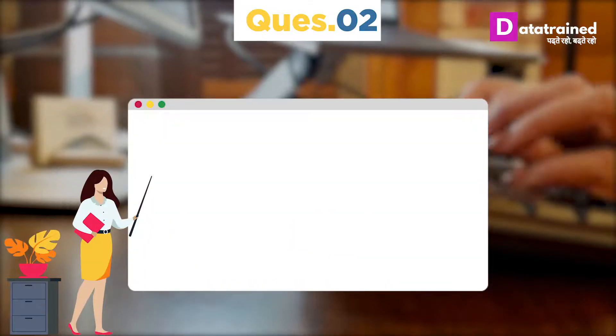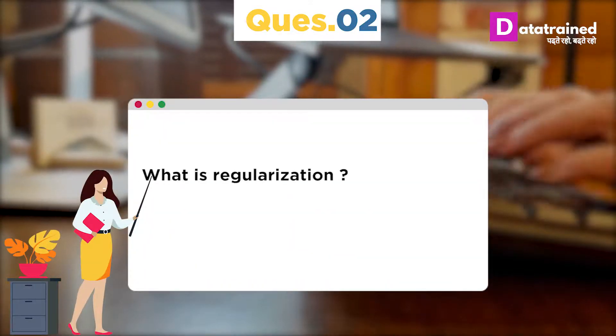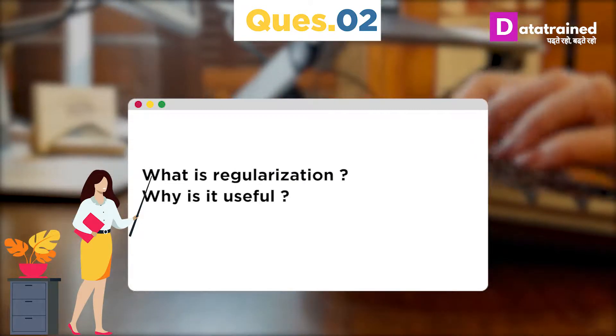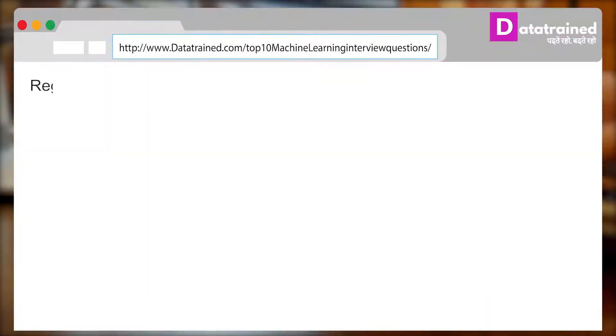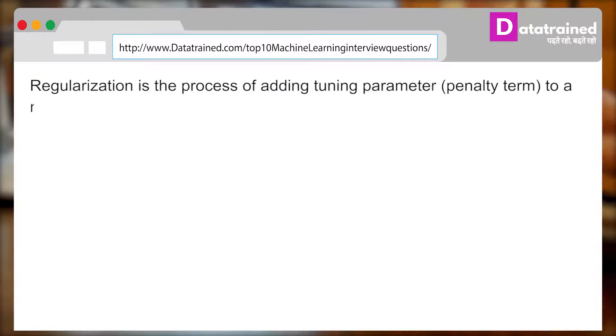Question number 2 is: What is regularization? Why is it useful? Regularization is the process of adding tuning parameter to a model to induce smoothness in order to prevent overfitting.